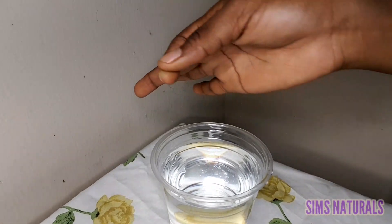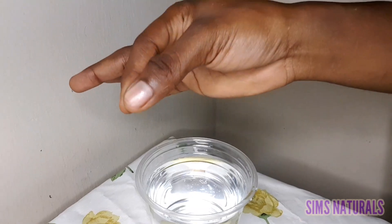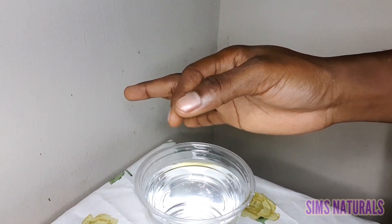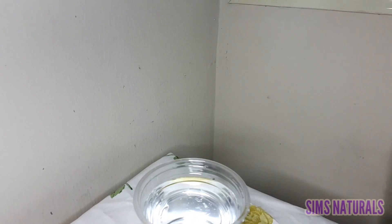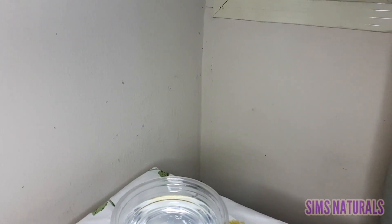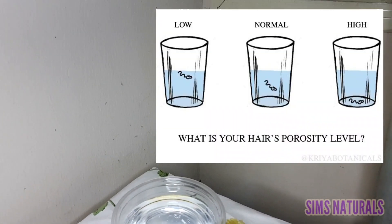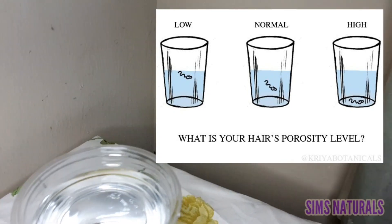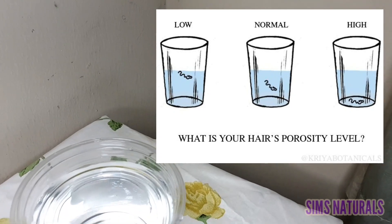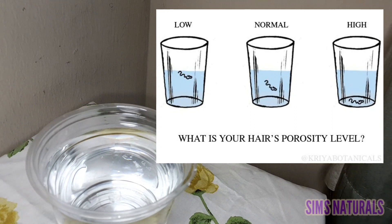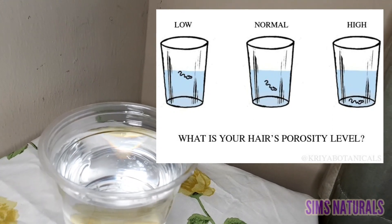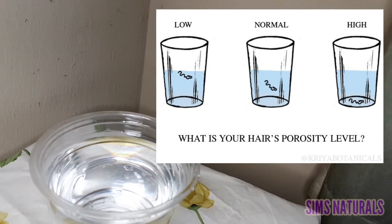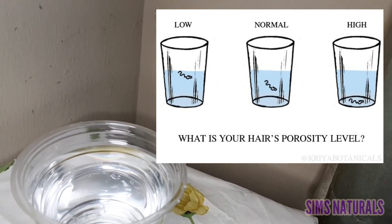Here's a strand of freshly washed hair in my hand and I'm going to drop it in. We're going to wait for about two to three minutes. If this strand of hair should sink, it means that I have high porosity. If the strand of hair should float, it means I have low porosity. And if it stays in the middle, it means I have medium range porosity.